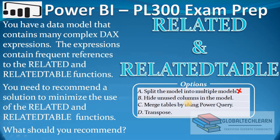Option B is to hide unused columns in the model. By hiding unused columns we can simplify the model and it will look nice and clean, but it will not remove the complex measures where we have used RELATED and RELATEDTABLE DAX functions. So this option we can also ignore.